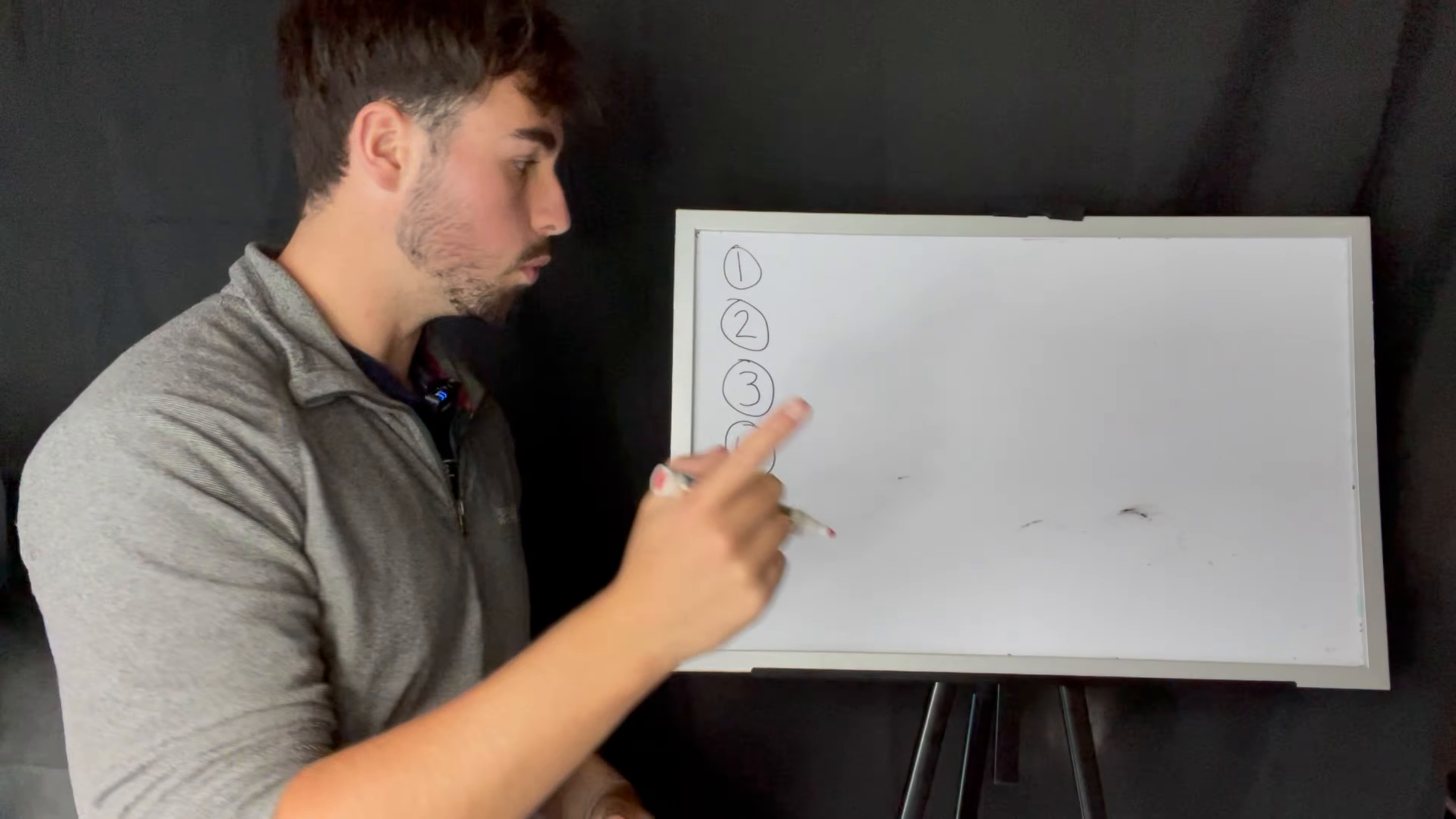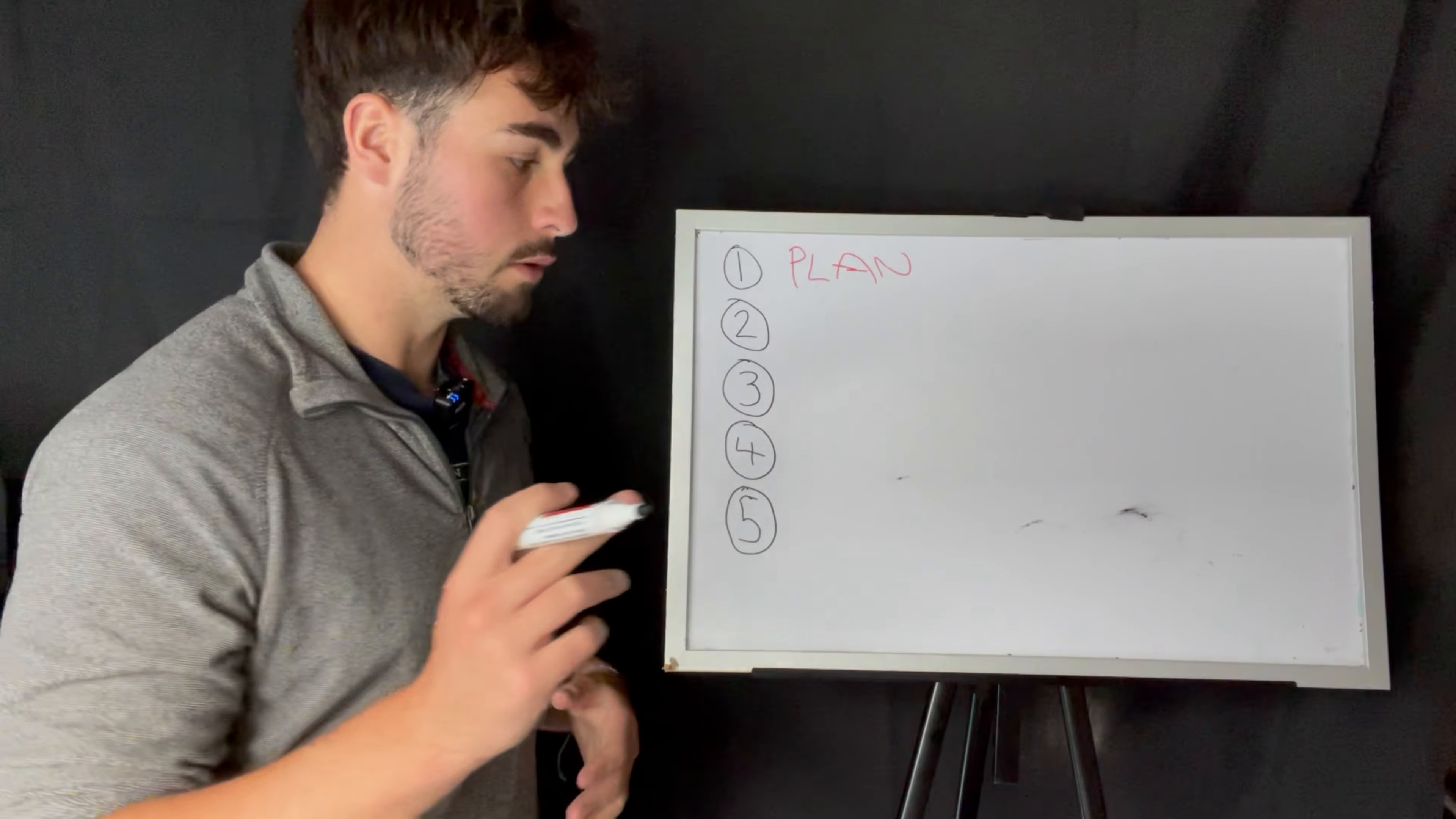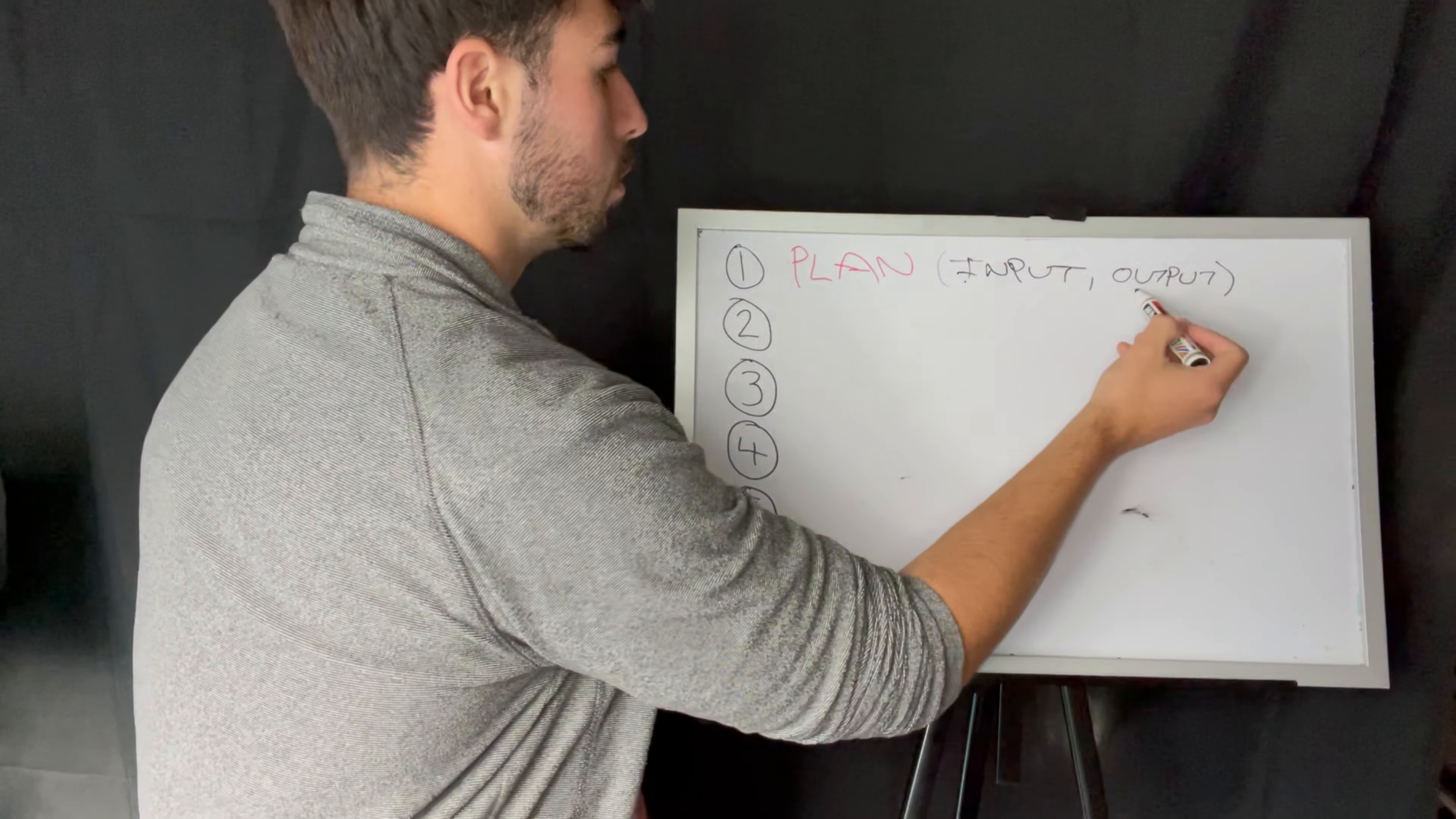For number one, the first step is plan. There are two parts to planning that you need to understand: input and output. When it comes to inputs and outputs, these are the two types of things that can go into your plan.